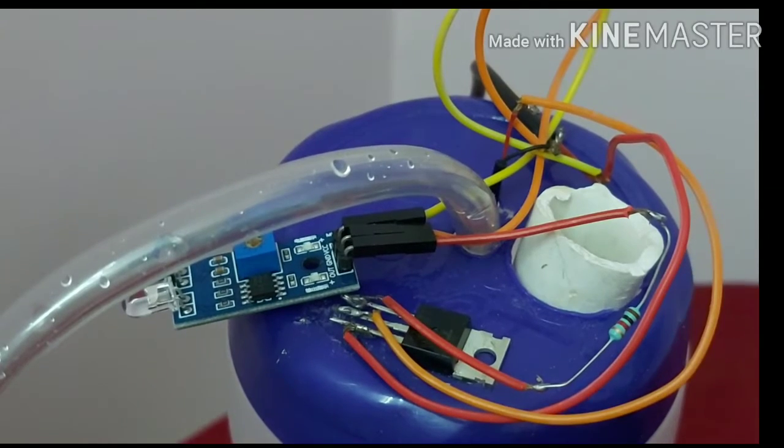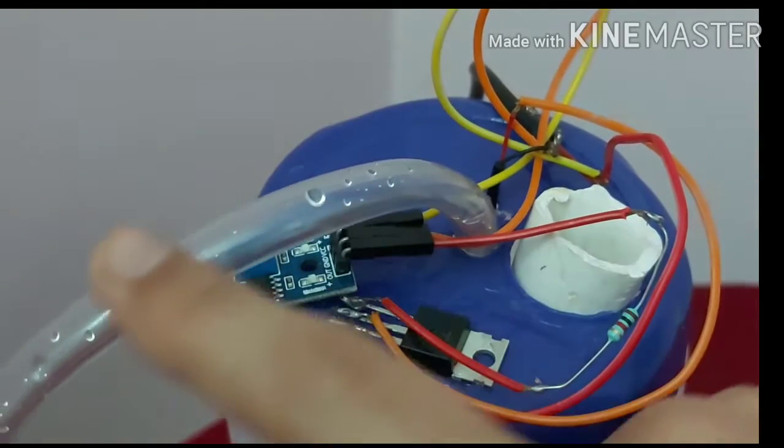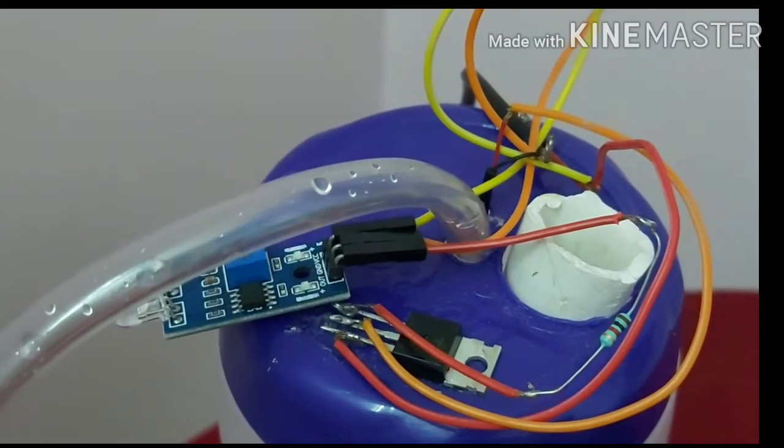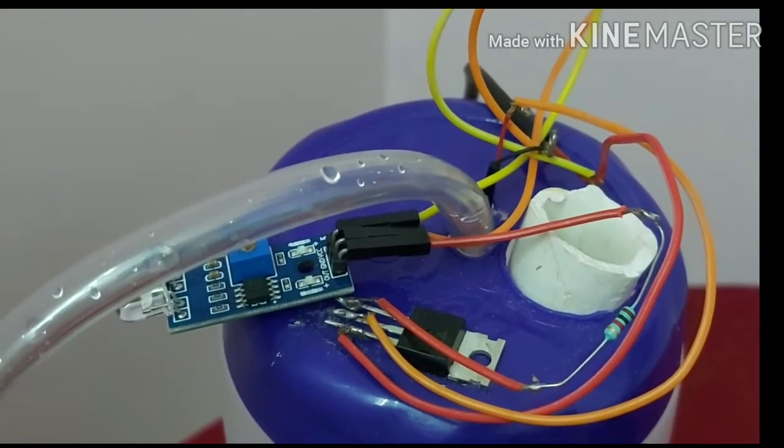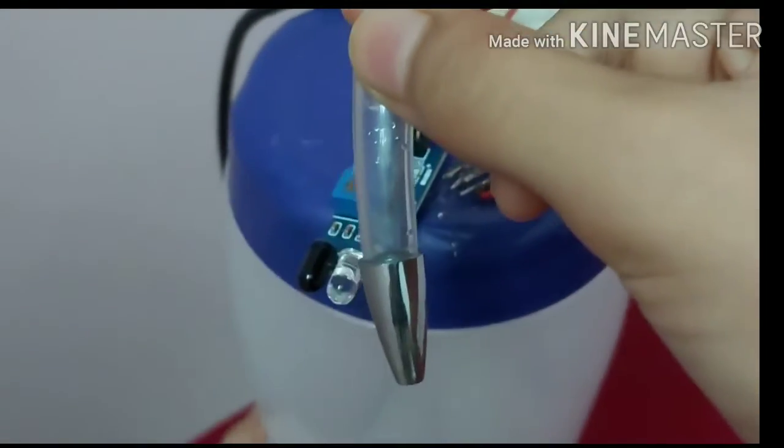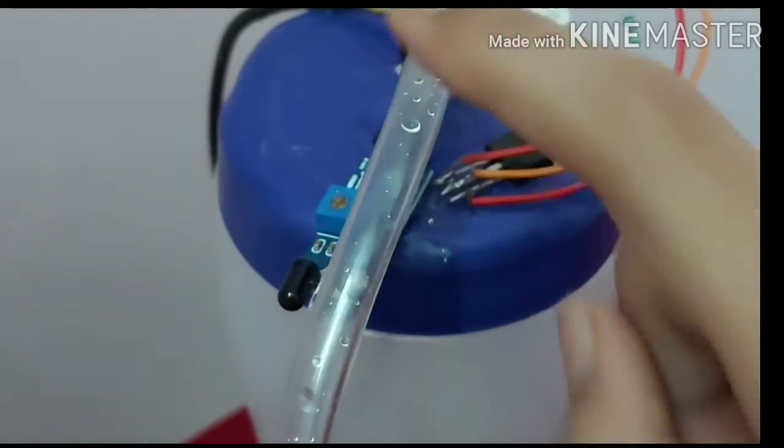Then we have to just make a small hole to insert the DC water pump in the bottom of the container, and just a small hole to insert out the pump's pipe.